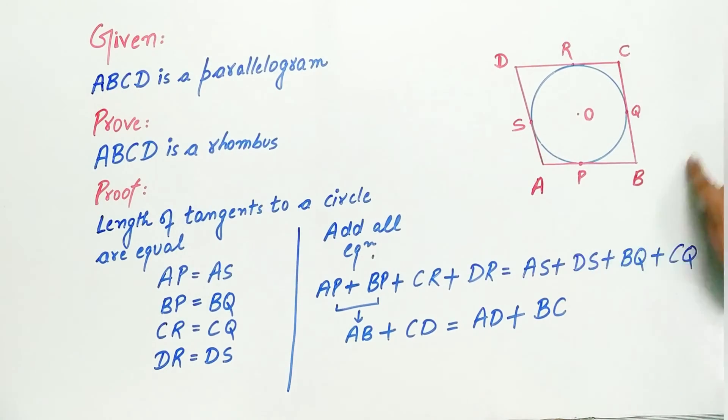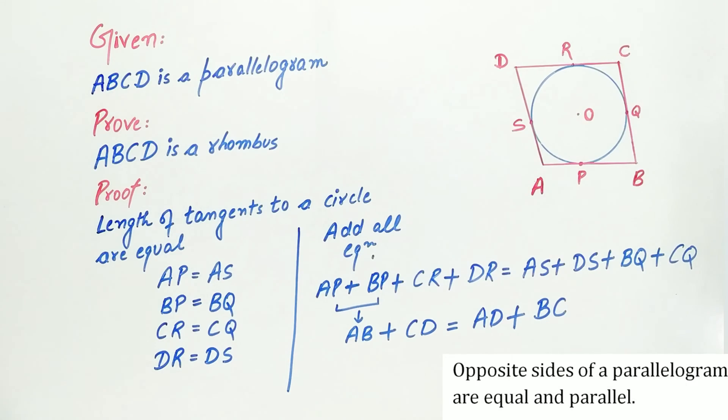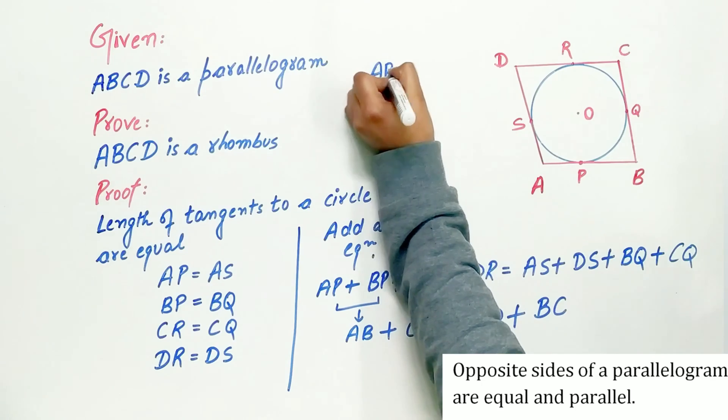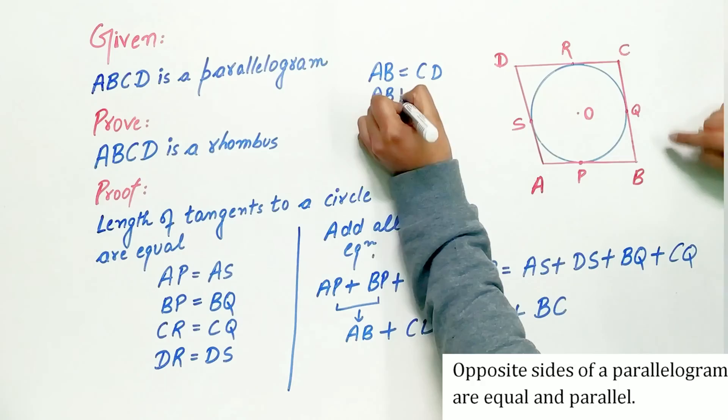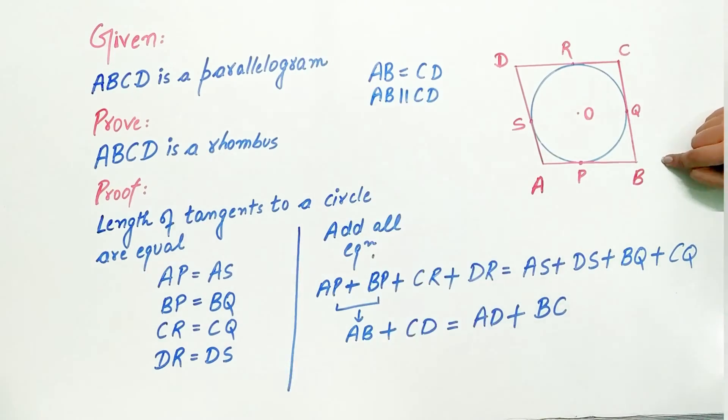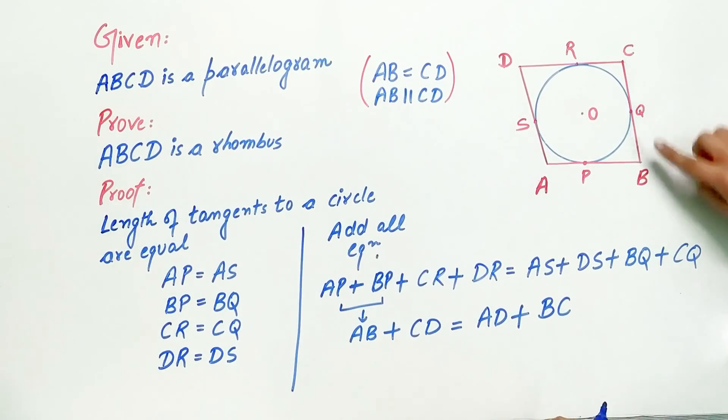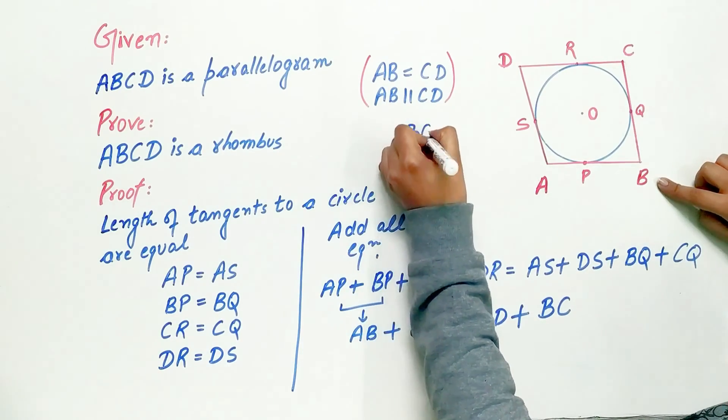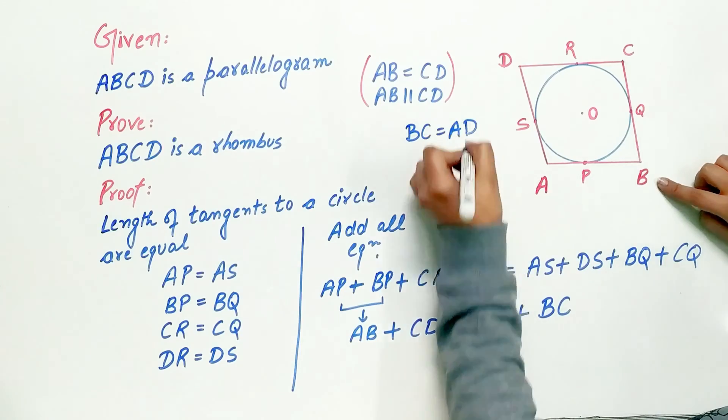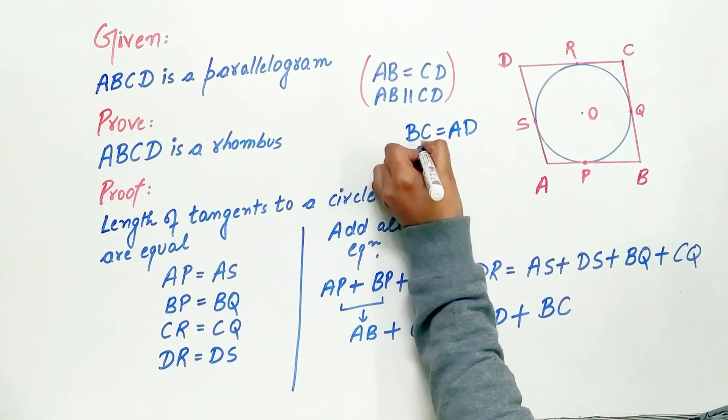Now, we know ABCD is a parallelogram that's given to us. And a parallelogram has opposite sides equal and parallel. That means AB is equal to CD as well as AB is parallel to CD. Similarly, BC and AD are equal in length as well as they are parallel.